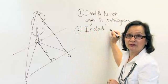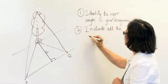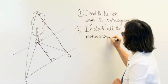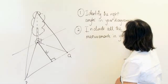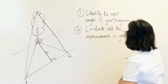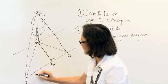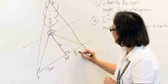Include all the measurements in your diagram. PM was 7 metres, MQ was 5 metres.